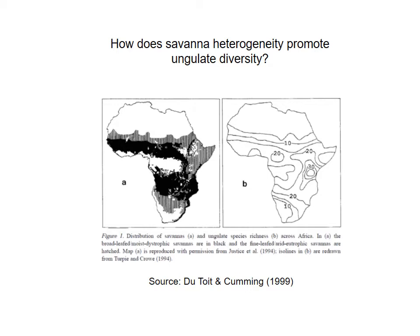You can see in panel A that savannah distribution is distributed around the lowland forests of central and west Africa, up into the Horn of Africa and down into southern Africa. And if you have a look at panel B, which shows the overall species richness contours for ungulates, you can see that they match quite closely, with the higher species richness being found up towards east Africa, towards the Horn of Africa. So quite clearly, the savannahs of Africa and their heterogeneous or patchy nature promotes ungulate diversity, as found in a paper by Tutoyan and Cumming in 1999.